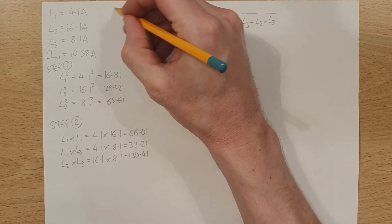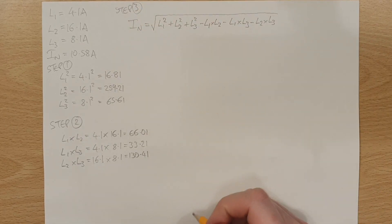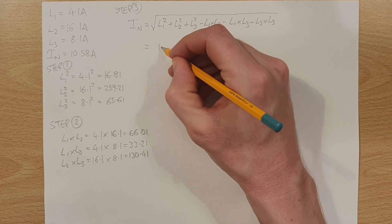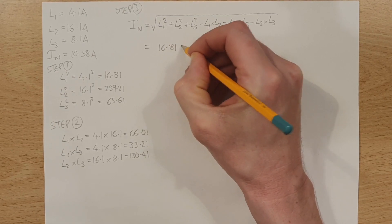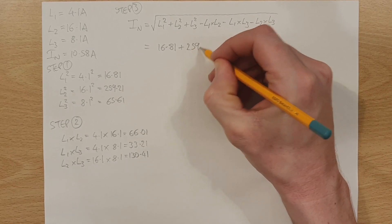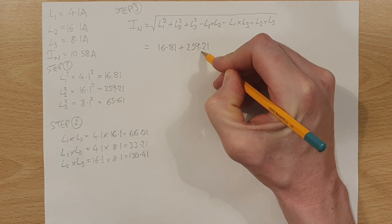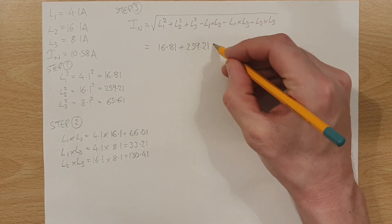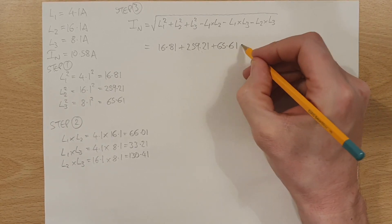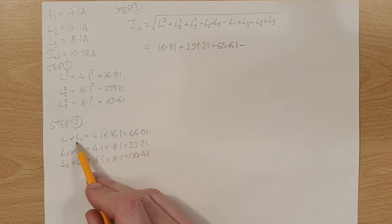So this really now is step three, where we put these values into the formula. So we've got L1 squared came out at 16.81. And then we're going to add on to that 259.21. So that's L2 squared becomes 259.21. And then we've got L3 squared, which was 65.61.